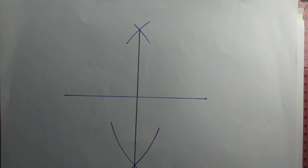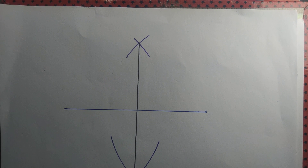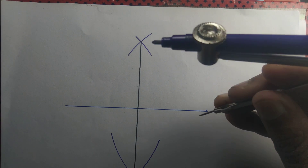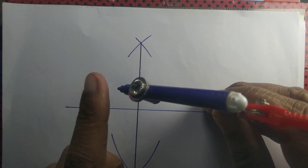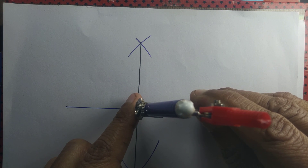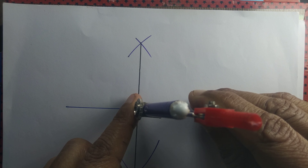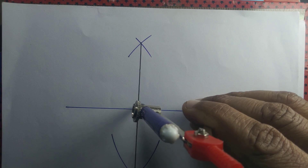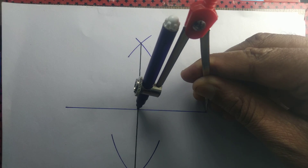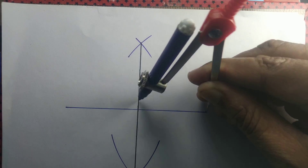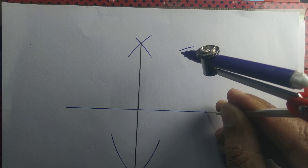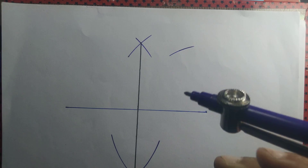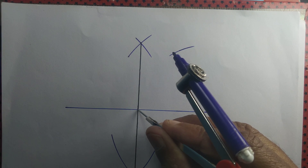Next, we change the radius of the compass so that it is equal to half the length of the segment — that is 5 cm. Now we draw an arc from one of the endpoints of the line segment, and then another arc from the midpoint of the line segment.